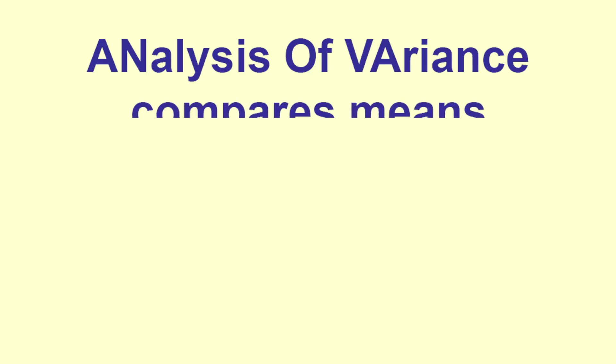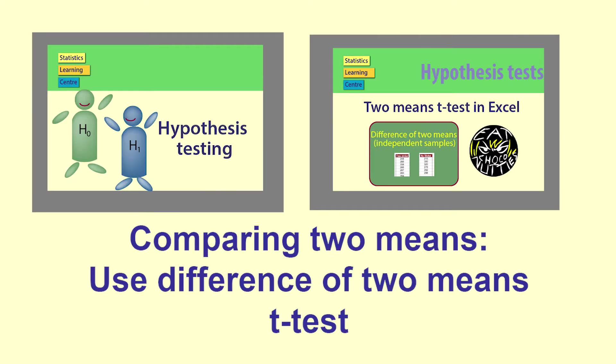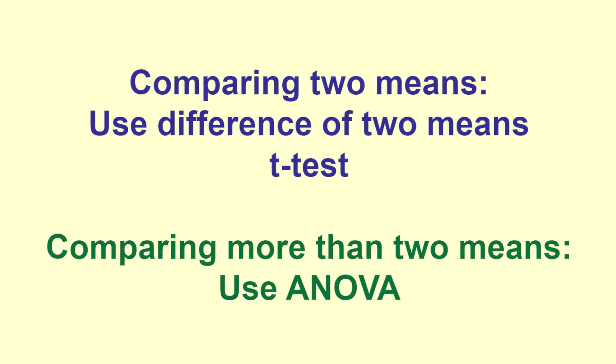Analysis of Variance is used to compare means. When we compare two means, we generally use a t-test for the difference of two means. But when we have more than two groups that we are comparing, we need to use ANOVA.